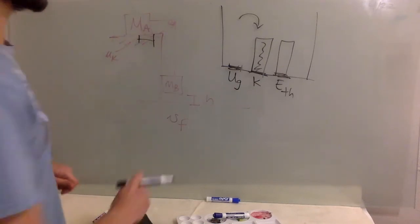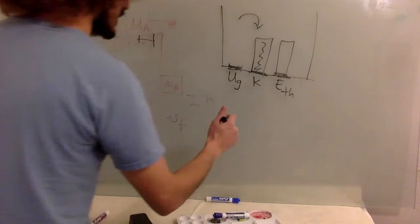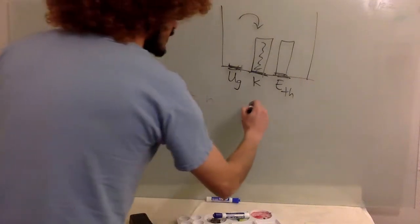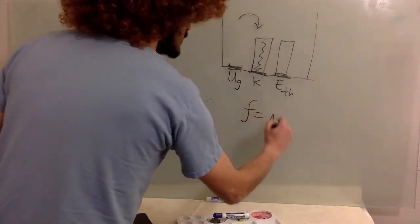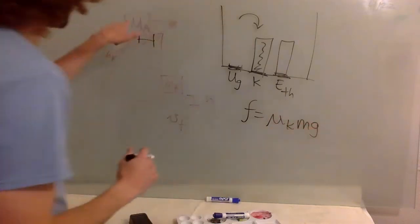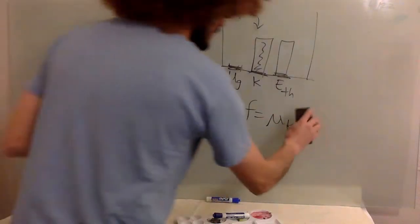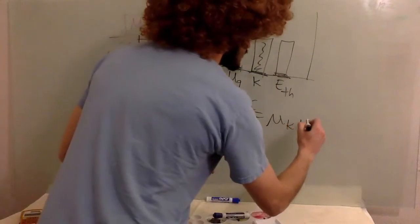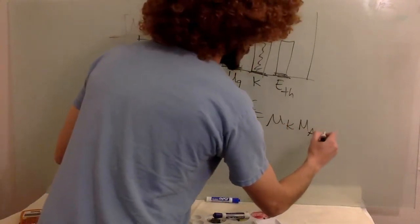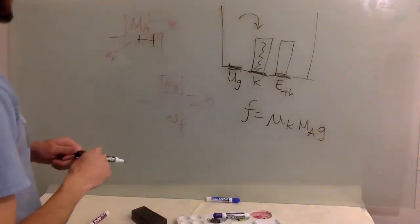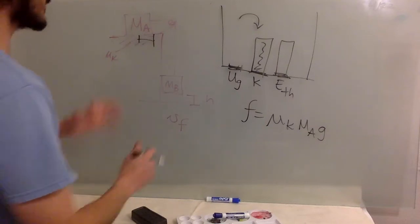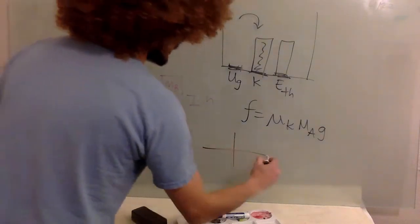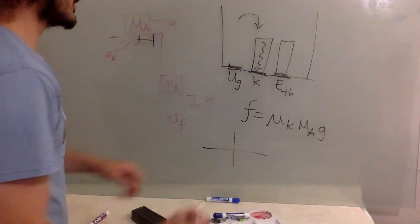So first thing that we have to do, calculate the work done by friction. So friction is mu kinetic m g. In this case it's going to be m a times g. And then, because, you know, I guess in principle, you should draw your free body diagram.